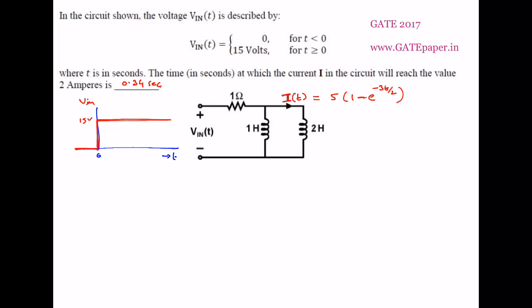From this expression we calculate how much time it requires to reach 2 amperes. Substitute I(T) equal to 2: we get 1 minus e to the power minus 3T by 2. So 2 by 5 equals 0.4, which equals 1 minus e to the power minus 3T by 2. From this, e to the power minus 3T by 2 equals 0.6, and simplifying using the natural logarithm, T comes out to 0.34 seconds.